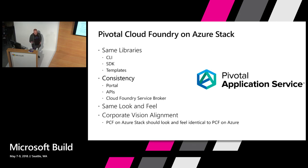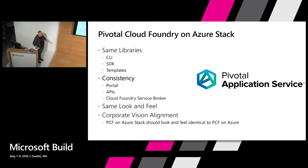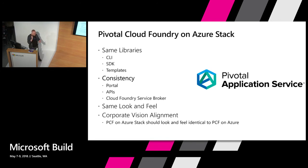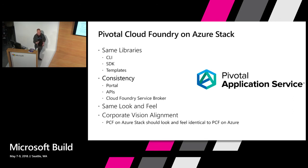The focus with Pivotal Cloud Foundry on Azure Stack is all about consistency and sameness. It's the same libraries, the same CLI, the same SDKs for both Spring and .NET, and all of the same templates. If you are defining your application manifests for Cloud Foundry on Azure, defining it for Cloud Foundry on Azure Stack is identical — there's no difference. When you log into the Pivotal Cloud Foundry UI, the admin UI, as well as the application UI on Azure Stack, it's identical. All the portals are the same, all of the APIs are the same, nothing is different.